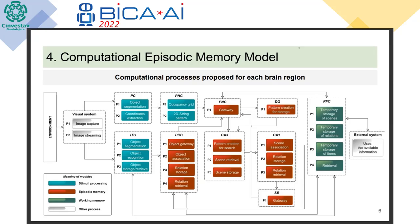CA3 also helps create and assign a pattern to the current scene, and it also helps with retrieval — when we are trying to retrieve episodes and we have only part of a pattern, we can use that part to find similarities in other episodes. Then CA1 helps create associations and relationships between multiple scenes. Thanks to this ability we can create plans, because we know that one scene or episode always happens before or after another. CA1 also helps with storage.